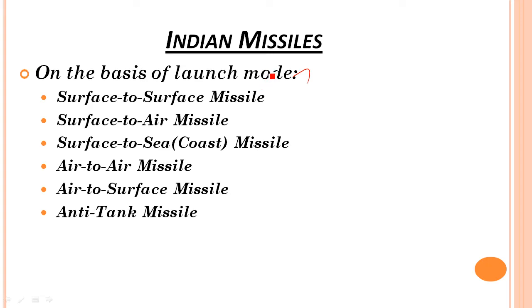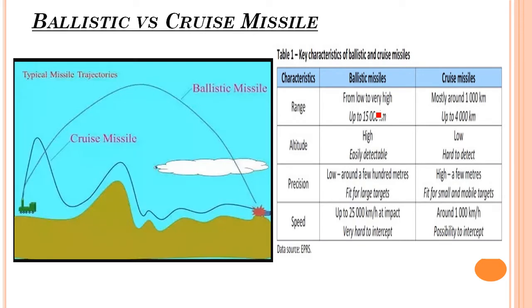There are two basic concepts we have to learn. The first concept: if we look at the functionality, the main key difference is the path to travel. One missile means a certain path to travel.